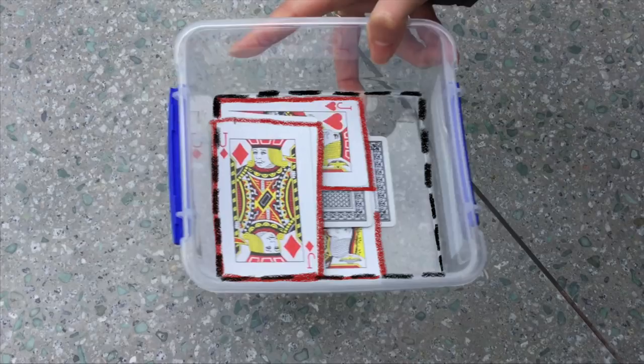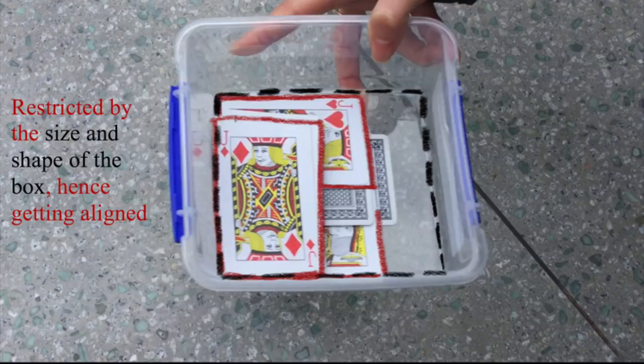The restriction of the poker card's mobility was applied by the container's wall. Thus, if the poker cards have similar rectangular or square shape as the containers, the alignment of the cards can occur. When the container became smaller, there was more restriction to the movement of the cards so that they eventually became more aligned through shaking.